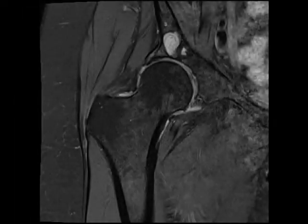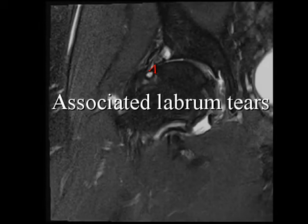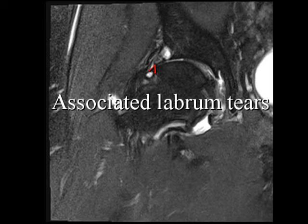Geodes are often not easily seen on x-ray, but on an MRI scan they're much more obvious — here's an example of a geode from an MRI scan. A common scenario I see in clinic is a person with an MRI scan demonstrating advanced osteoarthritic wear in association with a degenerative labral tear. This person has advanced arthritic wear with complete loss of joint space thickness, together with geode cyst formation and bony spur osteophyte formation. There's also an acetabular labral tear, highlighted here by the red arrow.